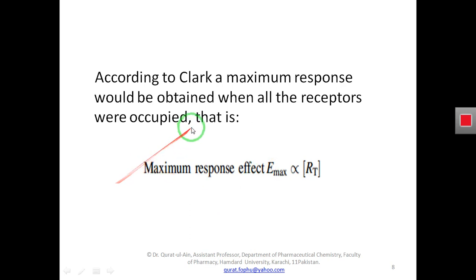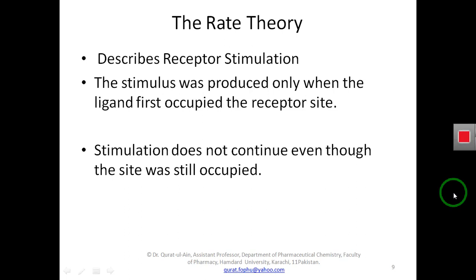According to Clark, a maximum response would be obtained when all the receptors were occupied. When all receptors present in the cell for that drug are occupied by the drug, the response will be maximum. If some receptors are present that are not bound with the ligand, the response will not be maximum. I hope you understand about Clark's theory. I will now explain the rate theory.